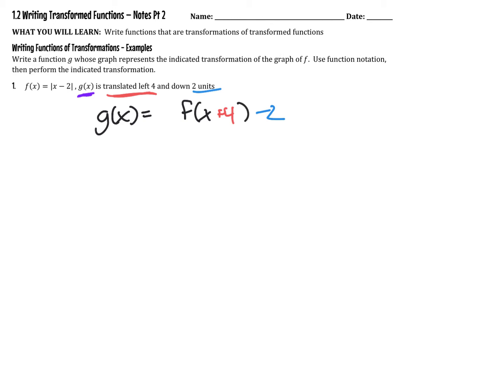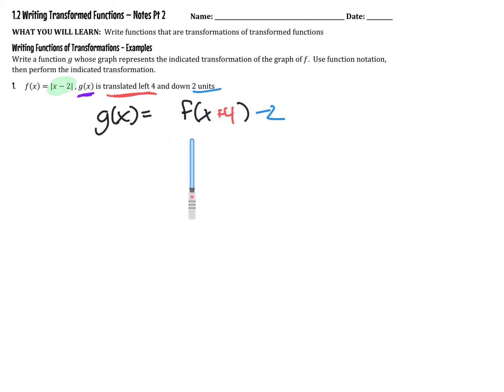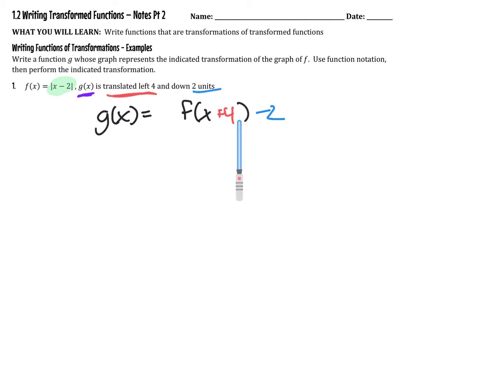The key difference in this video is that we're going to apply this transformation to something that's not just a parent function. What this function notation is saying is that to find g, we plug x plus 4 in for x in f — so everywhere that we see an x, we plug in x plus 4. And then after we've done that inside the function, we subtract 2. So it's almost like this is our recipe, our directions on how to find g from f.